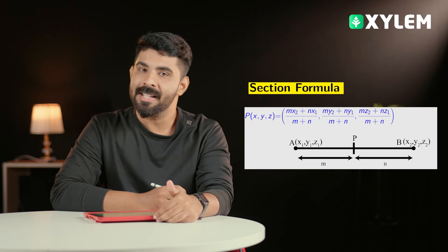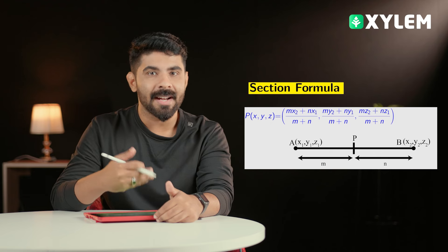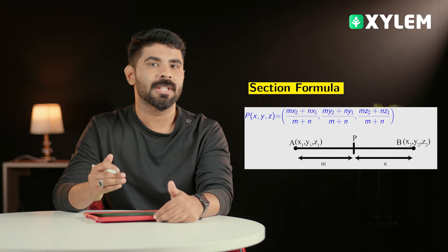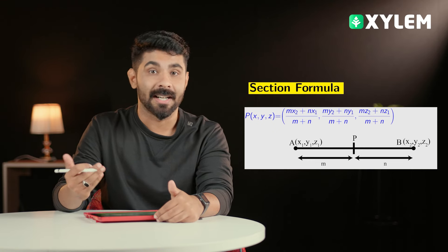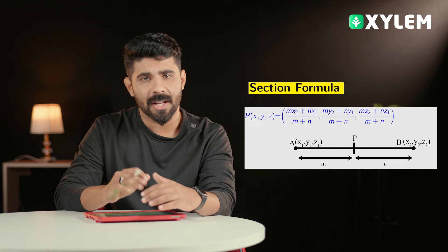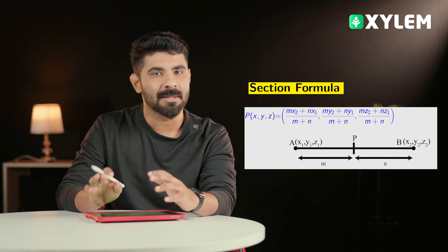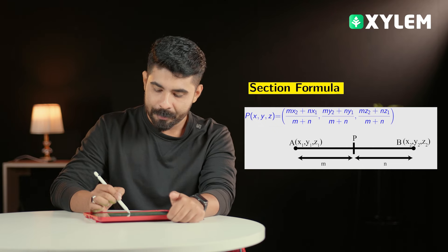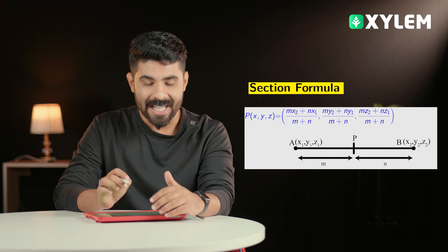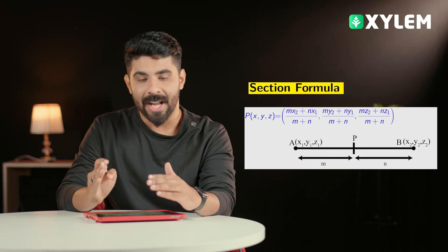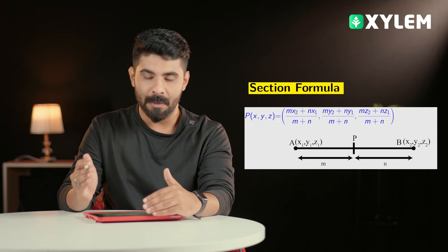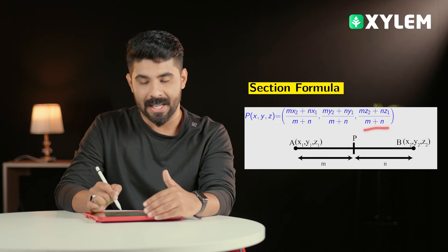Now we will go to the Section Formula. We need to consider three coordinates. For internal division, the formula is: (mx2 + nx1) divided by (m + n), then (my2 + ny1) divided by (m + n), then (mz2 + nz1) divided by (m + n). This is the internal division.